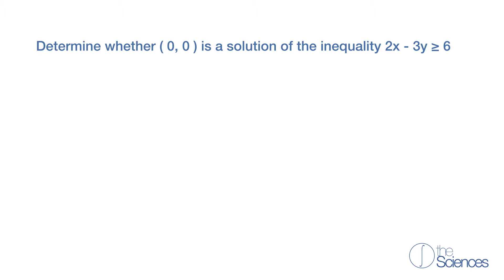Determine whether (0, 0) is a solution of the inequality 2x minus 3y is greater than or equal to 6. Here we have x is 0 and y is 0, so what we're going to do is substitute x for 0 and y for 0.